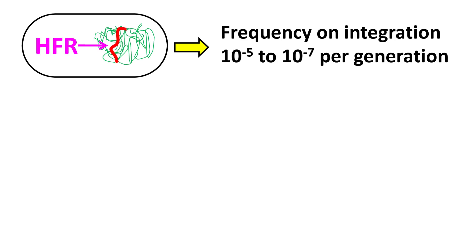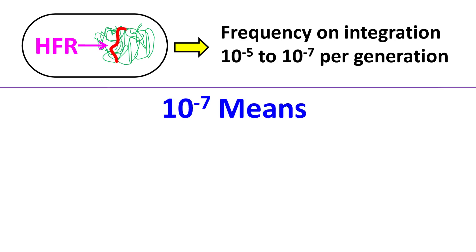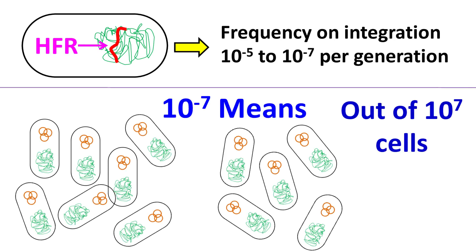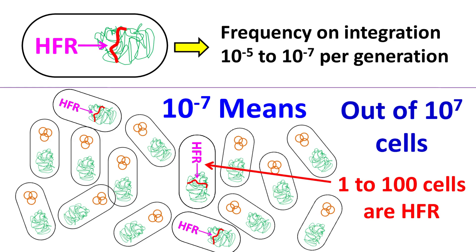The frequency of this integration is about 10 raise to minus 5 to 10 raise to minus 7 per generation. In other words, if 10 raise to 7 cells have the F-plasmid, then out of 10 raise to 7 cells, 1 to 100 cells will have the F-plasmid integrated as HFR.